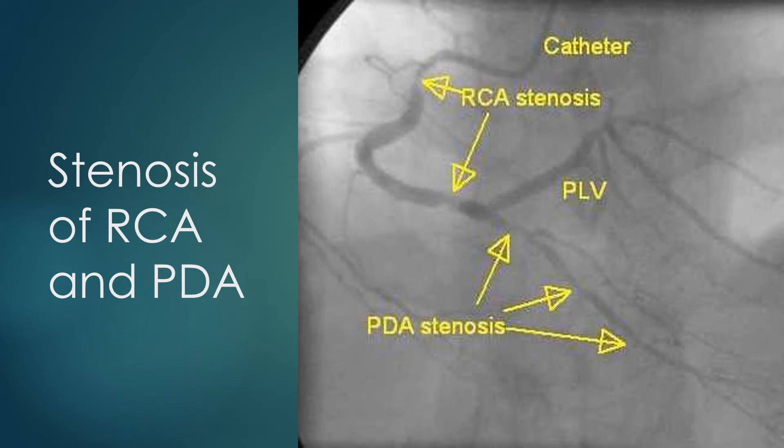The PDA shows three tandem stenoses from the proximal to distal region. The PDA appears to be a smaller caliber vessel than the PLV. This could also be because the vessel is underfilled due to the tandem stenosis. Very often, the vessel size increases remarkably after opening up the lesions by balloon angioplasty or stenting.